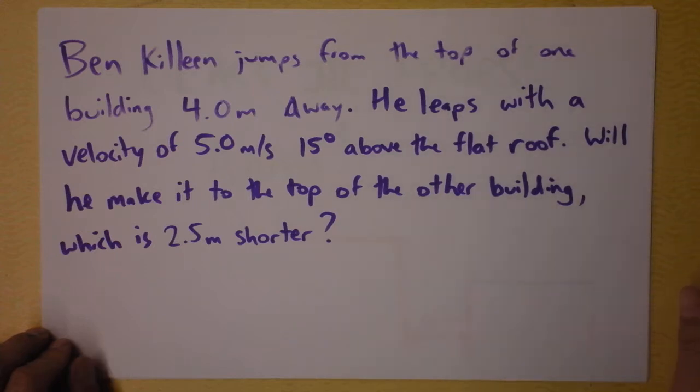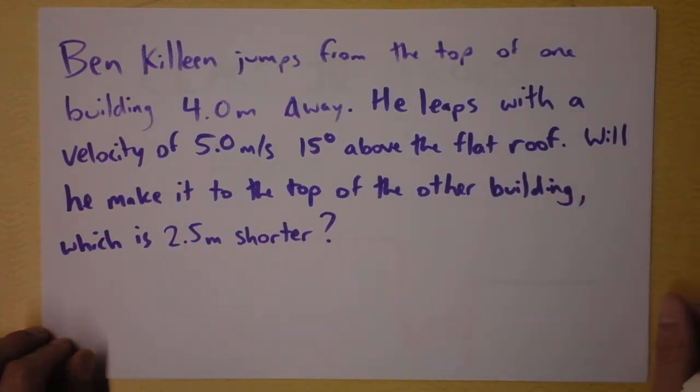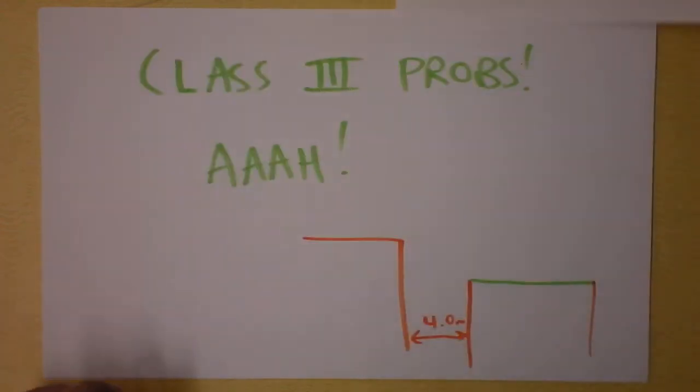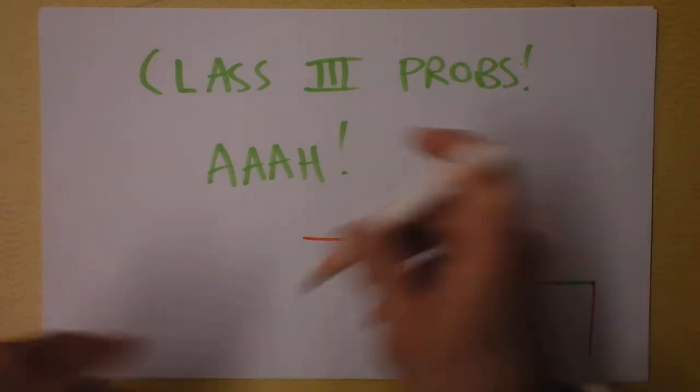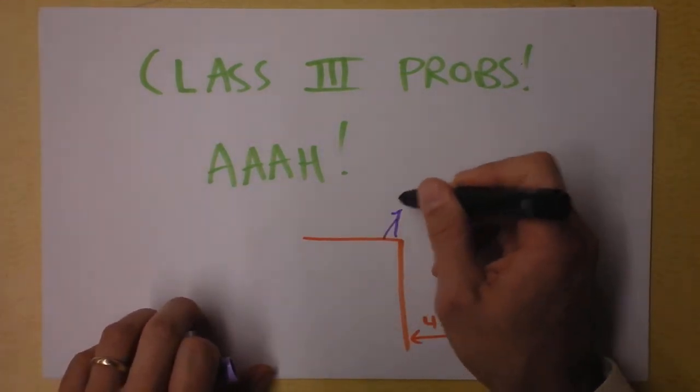He leaps with a velocity of 5.0 meters per second above the flat roof. Will he make it to the top of the other building, which is 2.5 meters shorter? That's the question. So here's what I'm about to do. I'm about to draw you a little sketch of the building, and Ben Killeen's up here, and he's running, and he jumps.